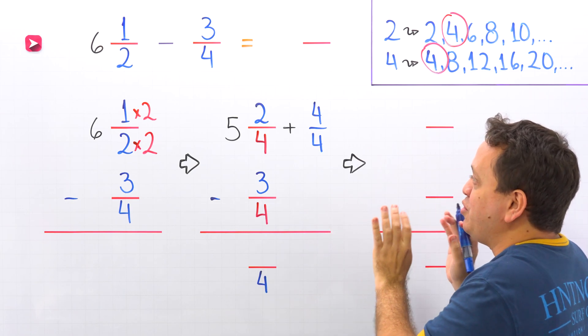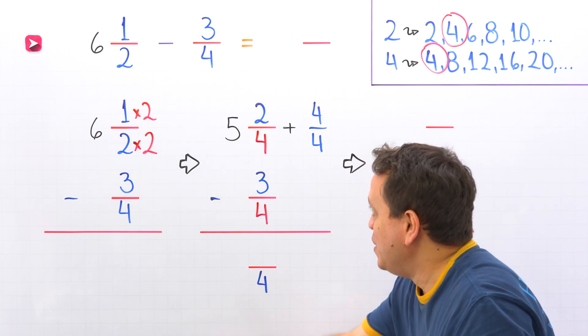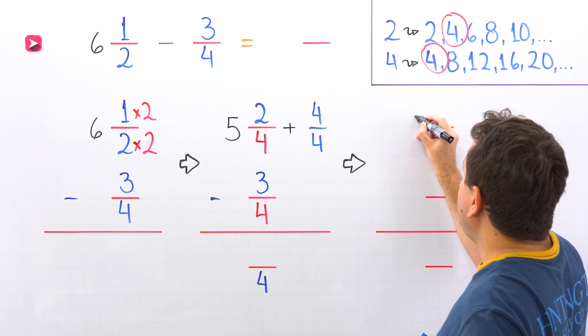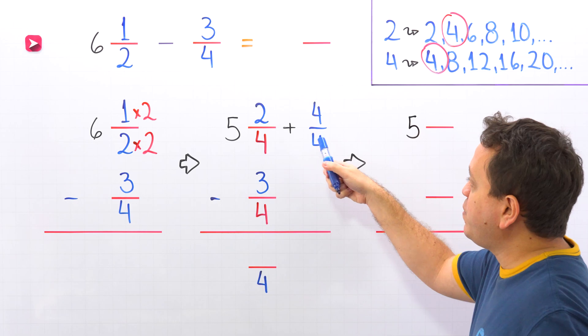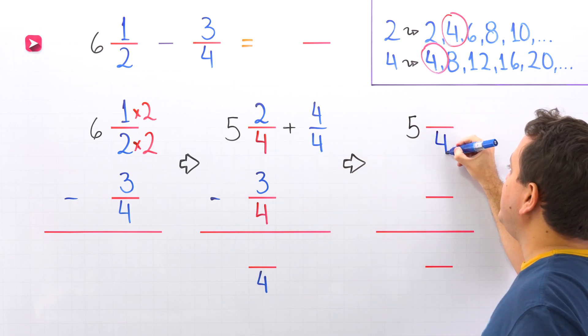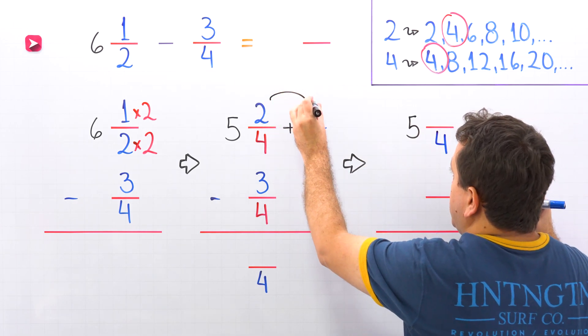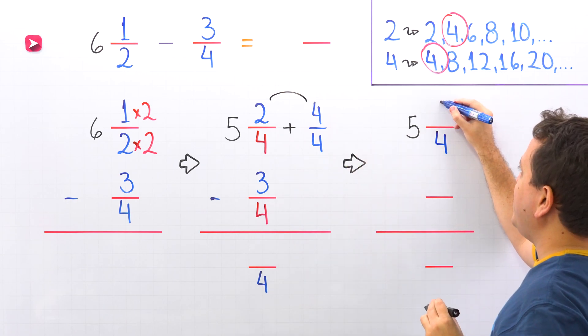Then the problem becomes really easy. Let's continue with 5. Next, we're going to add these two fractions with the same denominator. We have 4 on the left, 4 on the right. We can put 4 on this side. Now we add the numerators. And 2 plus 4 give us 6.